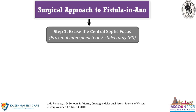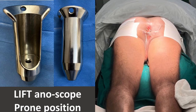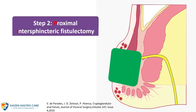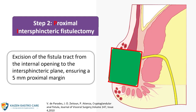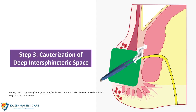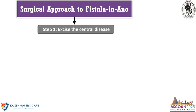Surgery for fistula is classified into sphincter-cutting — best suited for lower simple fistulas — and sphincter-preserving — which aims to preserve sphincter integrity while treating complex fistulas but carries a risk of recurrence. The surgical approach for any fistula: the first step is to excise the central disease. Proximal intersphincteric fistulectomy should be done for every patient irrespective of type or pattern. About 70% of the problem is tackled at this step. We call the patient prone, use the LIFT anoscope, strap the buttocks to make the intersphincteric space prominent, and dissect the intersphincteric space.